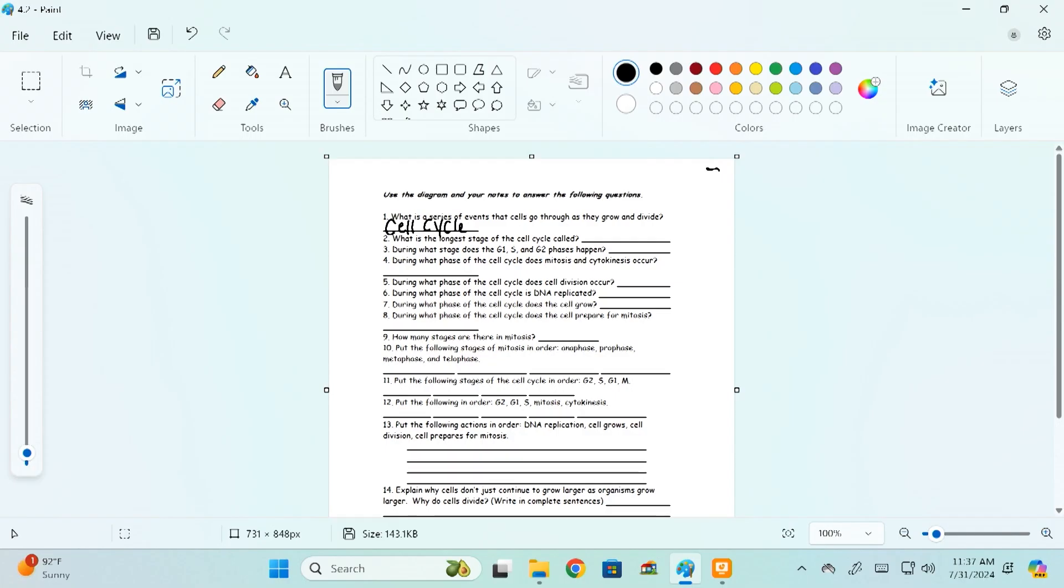So number two, what is the longest stage of the cell cycle called? I'll give you a hint. It's what we were talking about today. What phase, what stage of the cell cycle were we discussing today? That's known as interphase. A cell spends the majority of its life in this phase called interphase.